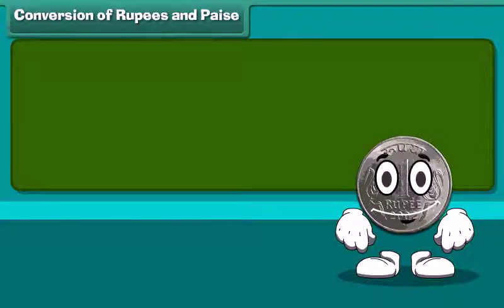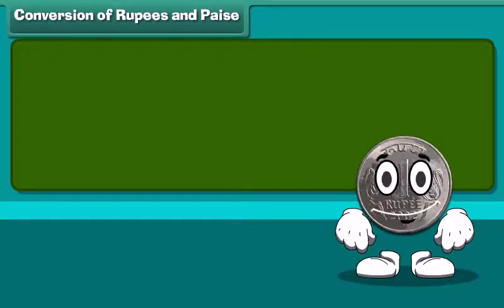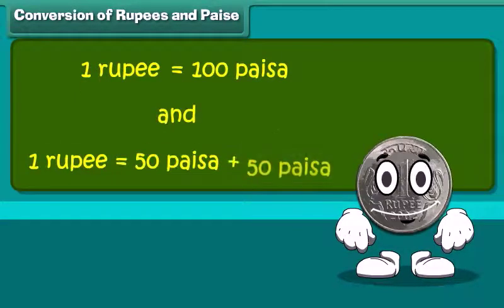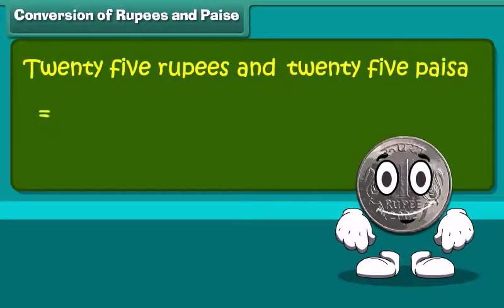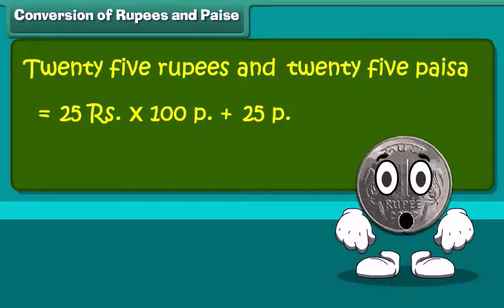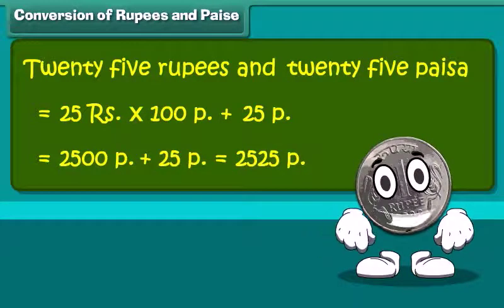We start with conversion of rupee to paisa and vice versa. 1 rupee is equal to 100 paisa. 25 rupees and 25 paisa is equal to 25 multiplied by 100 plus 25 paisa. This becomes 2500 plus 25 paisa, which we can say as 2525 paisa.